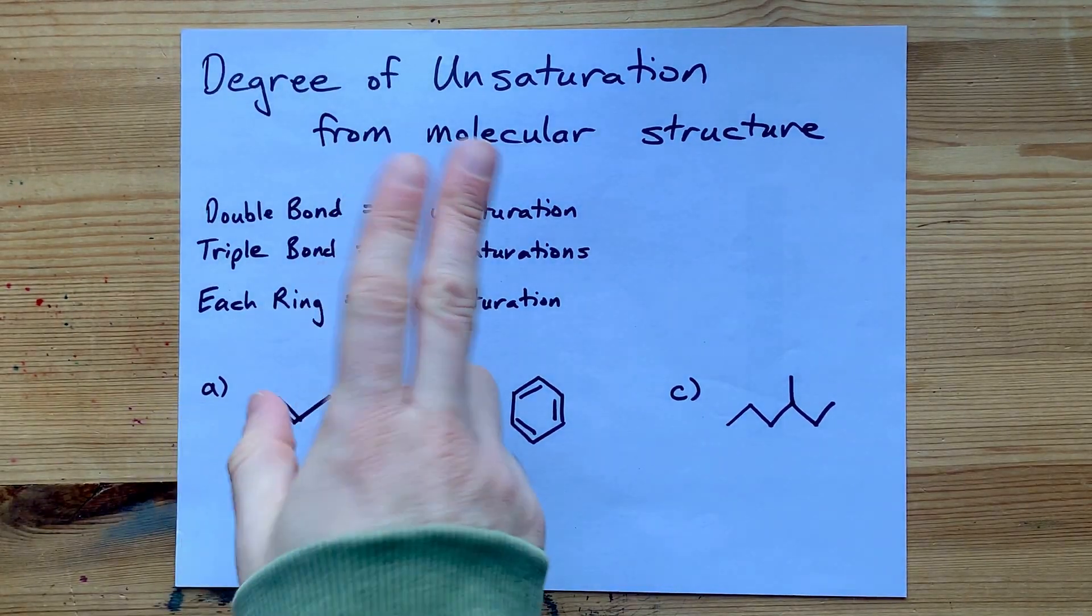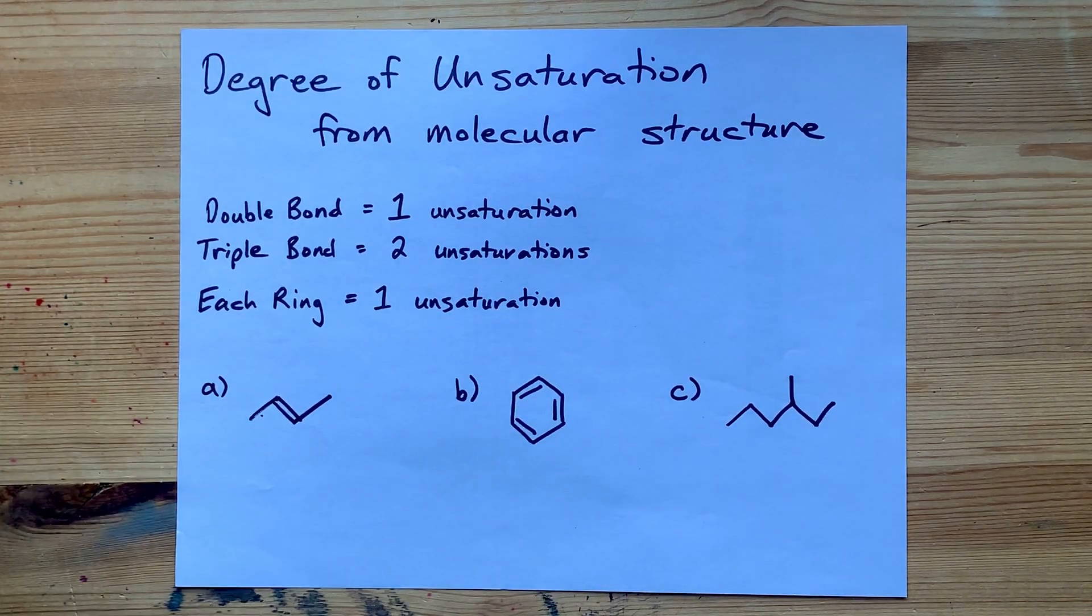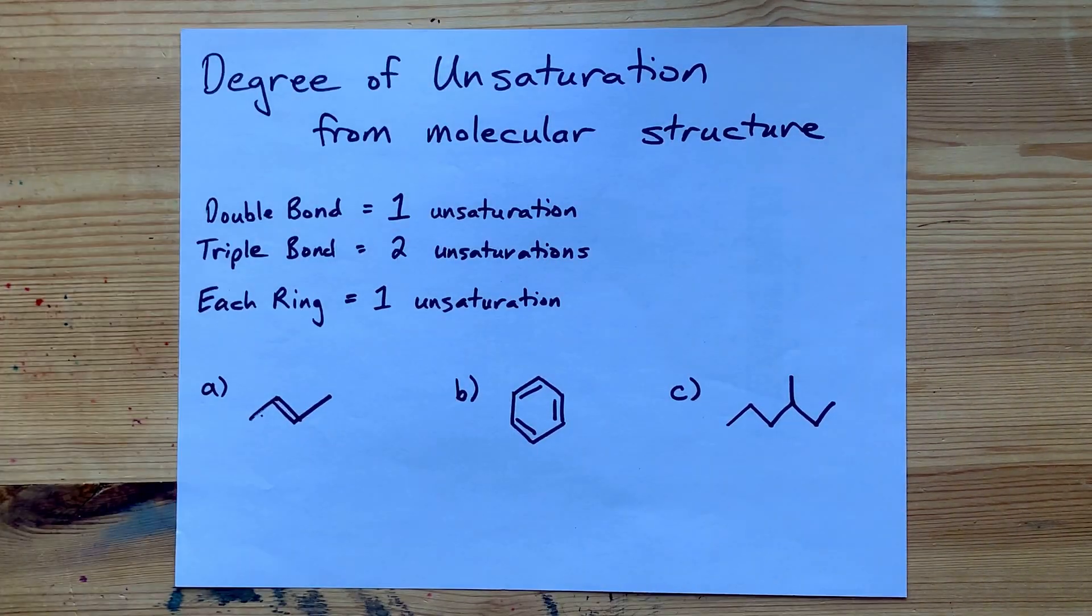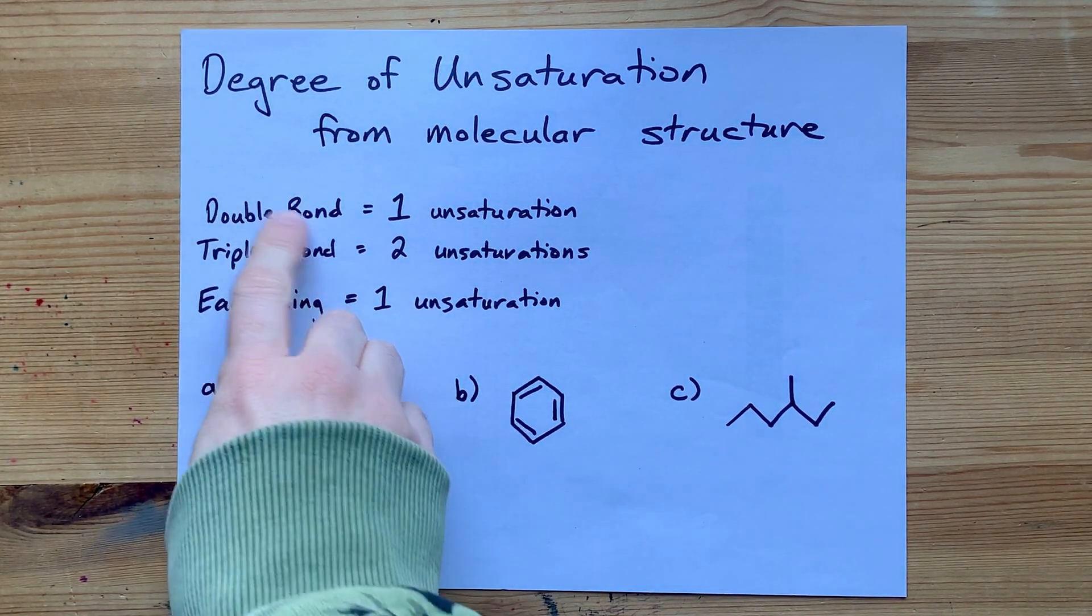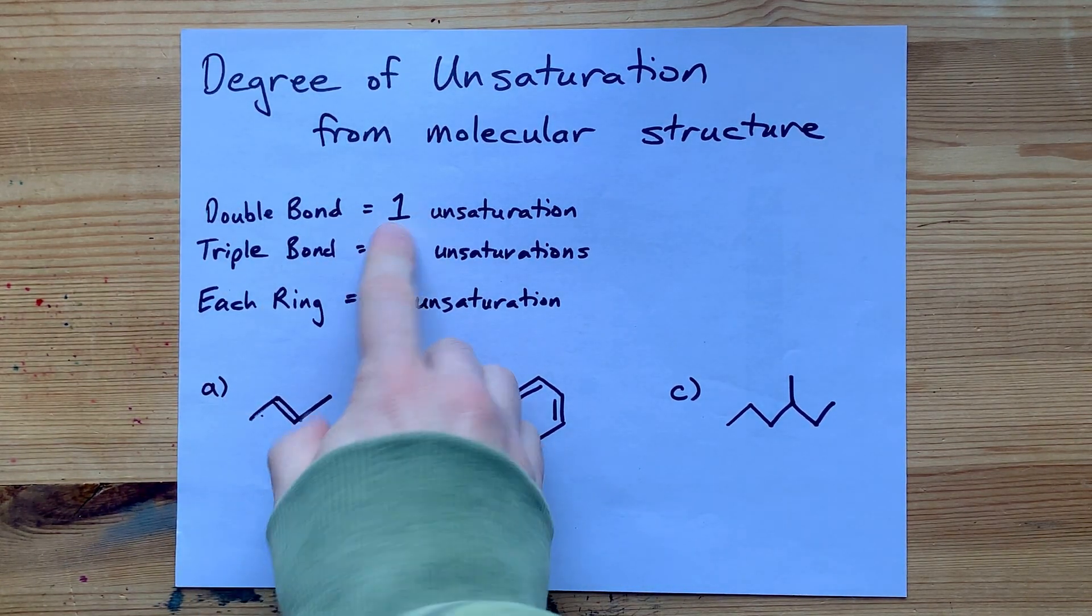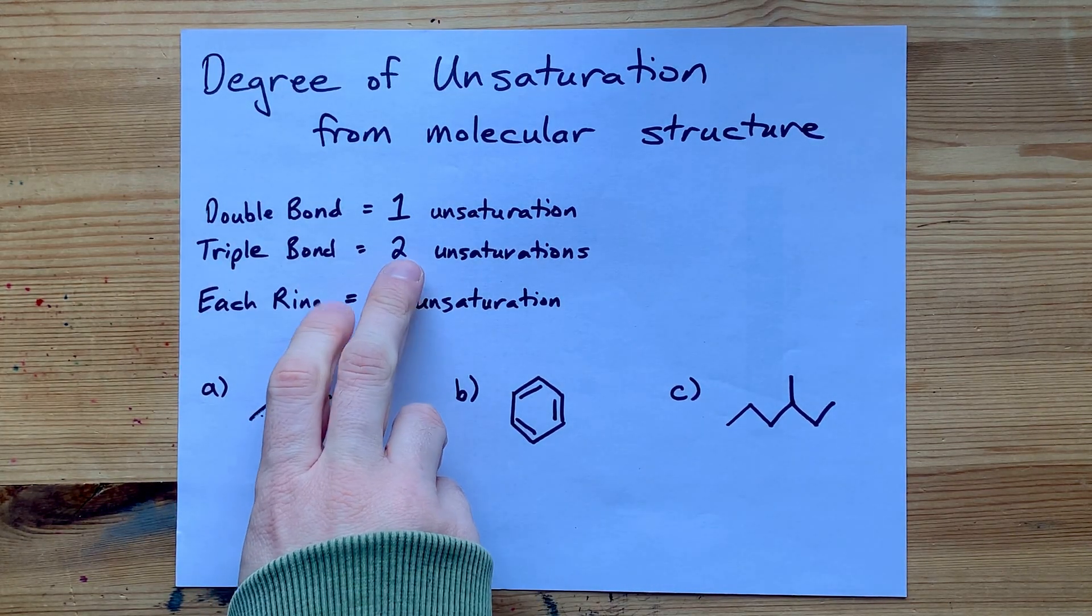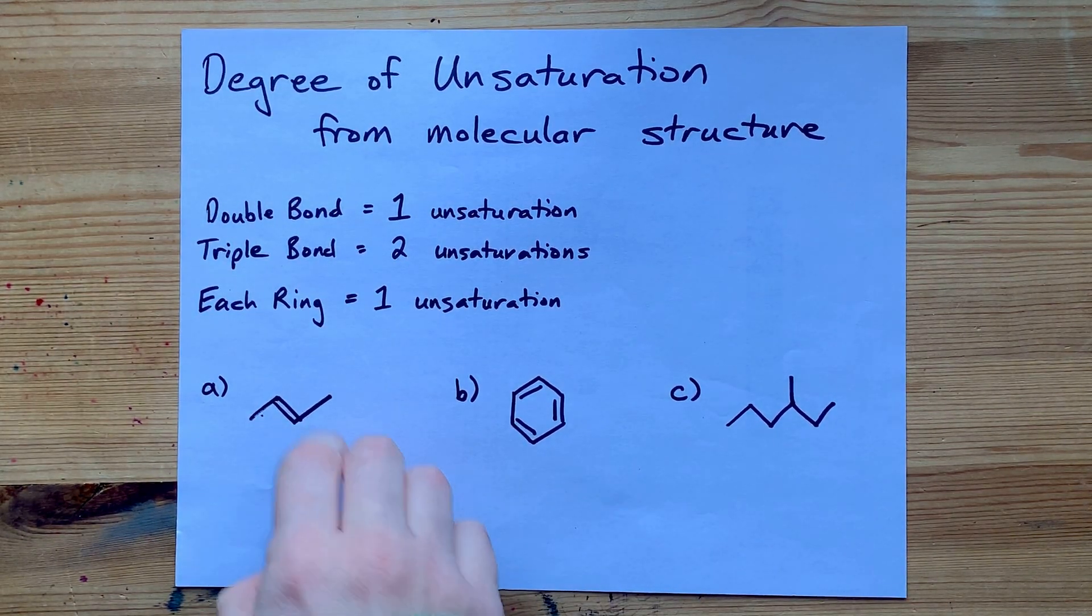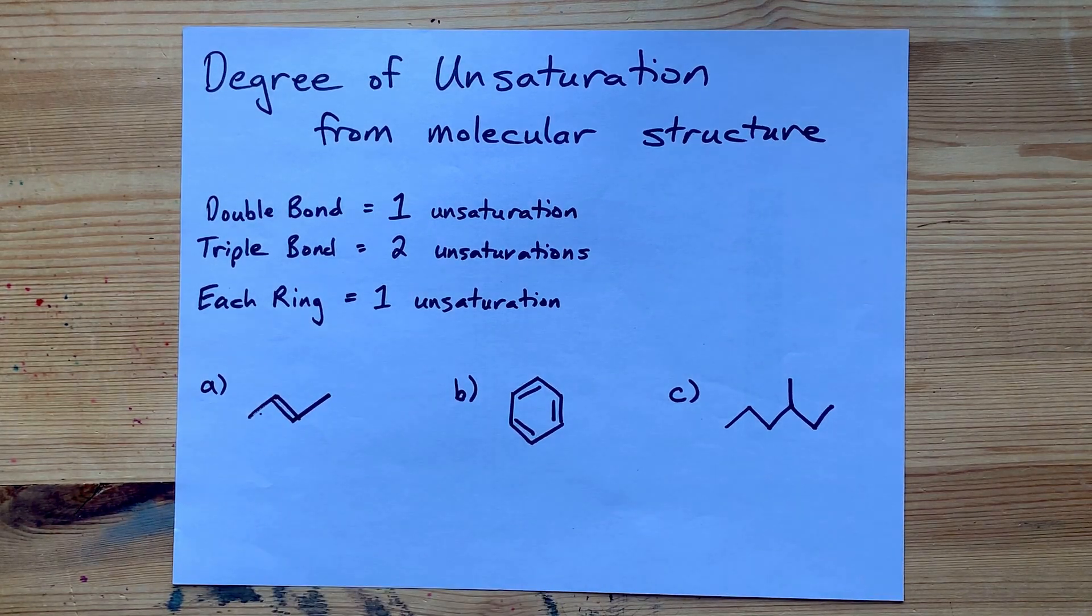The degree of unsaturation can be gleaned from the molecular structure. You don't necessarily need to use the formula, as long as you have a picture of the molecule. One double bond will contribute one to the overall unsaturation. A triple bond contributes two. And a ring structure contributes one extra unsaturation.